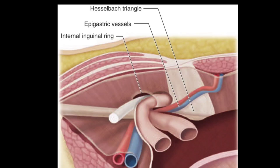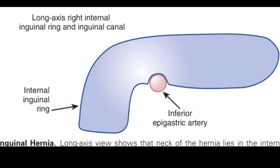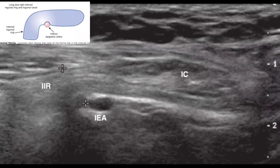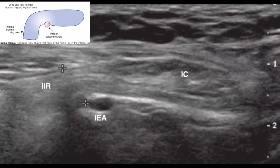The medial side would be for the direct inguinal hernia. The diagram also shows the inferior epigastric artery, the internal inguinal ring, and the inguinal canal — the long axis of the inguinal canal, the right internal inguinal ring, and right internal inguinal canal. On the ultrasound image, IEA indicates the internal epigastric artery; towards the right is the internal inguinal ring. If you target the landmark of the internal epigastric artery, you will be able to identify both the inguinal ring and the inguinal canal.